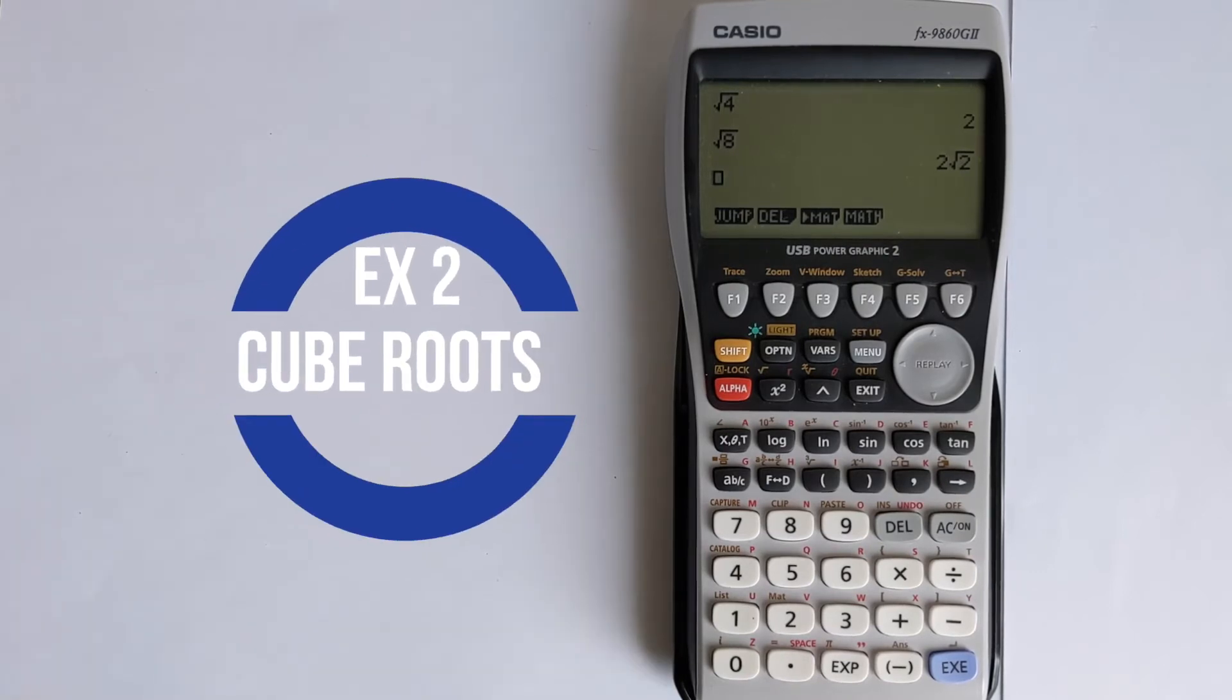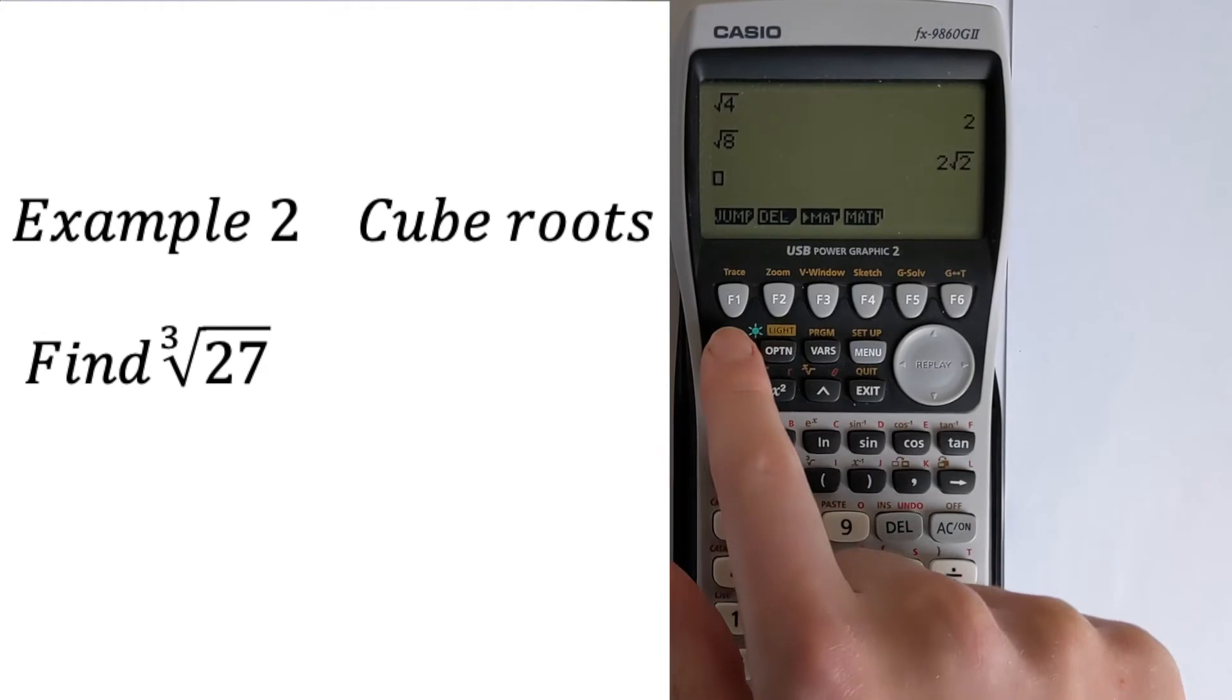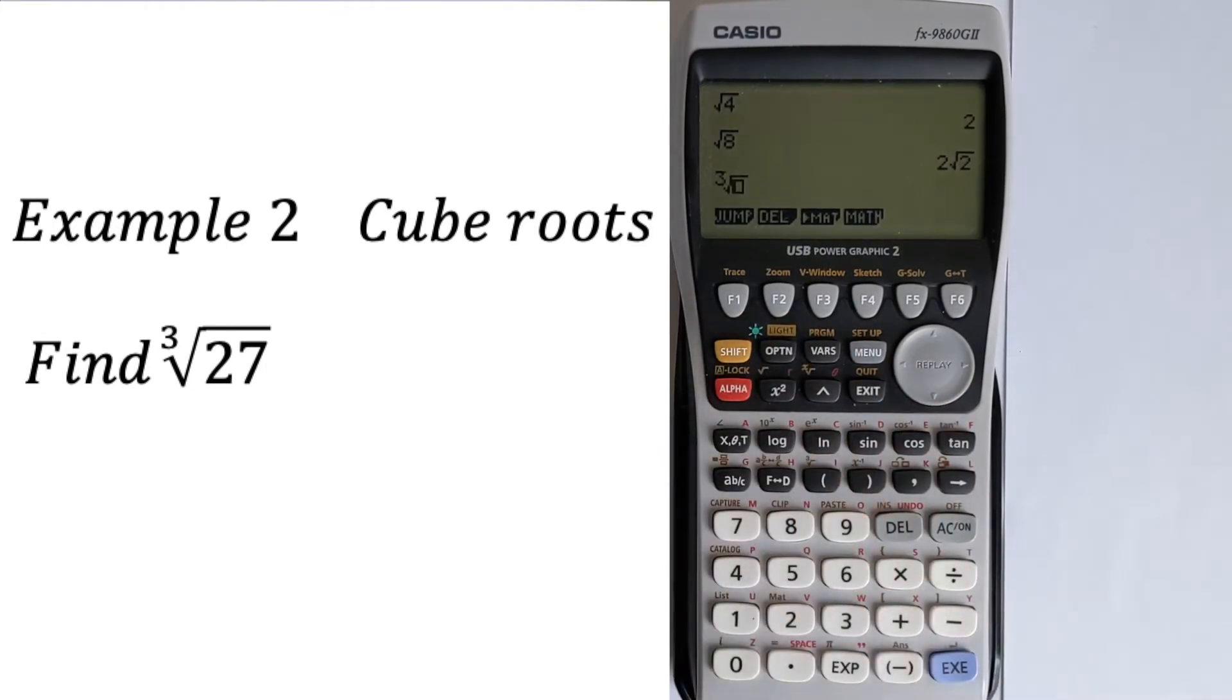The next thing we're going to look at is how to do cube roots. So let's find the cube root of 27. There's a button that lets you do this and it's hidden in a slightly different place. The cube root is located on this bracket here. So you press shift and then this bracket and that will access the cube root function.